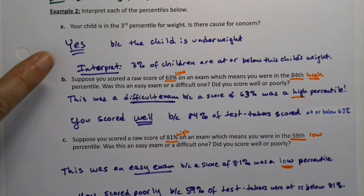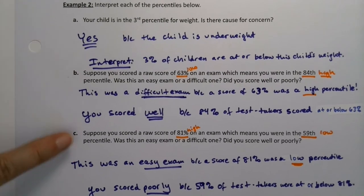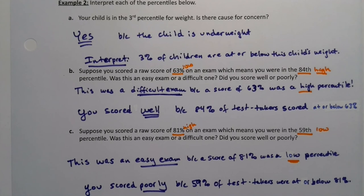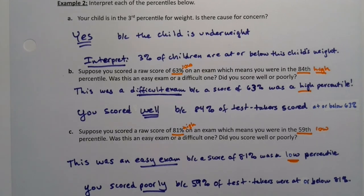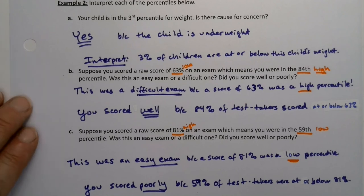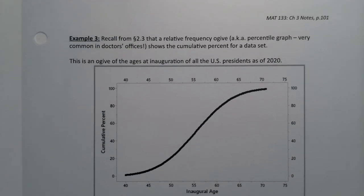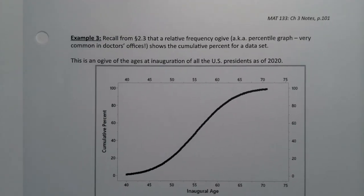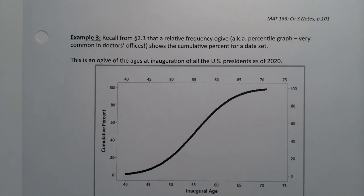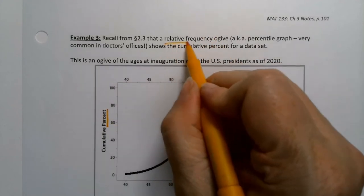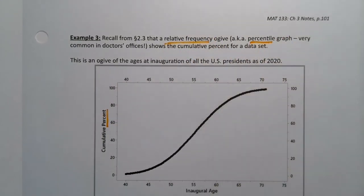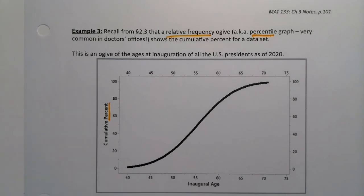Percentile graphs often show up on exams — you can get SATs and ACTs back and they'll give you percentile graphs. Also on the charts in your doctor's office, there are percentile graphs for children's weights and heights. That is an ogive, which we have seen before — an ogive comes from section 2.3. This is a relative frequency ogive because these are percents, so it's a percentile graph. It's very common in doctor's offices, and if you're going into nursing, you will work with these types of graphs.